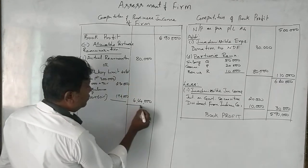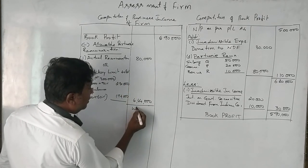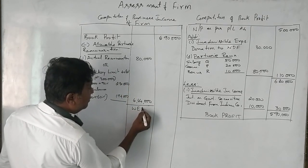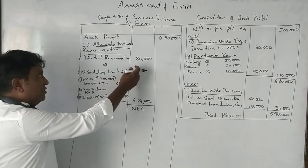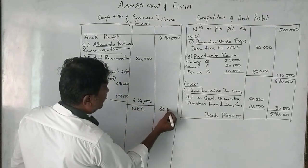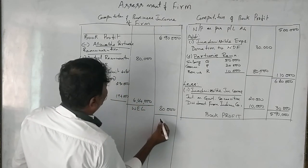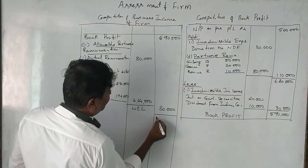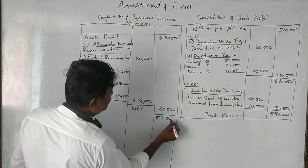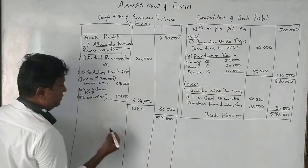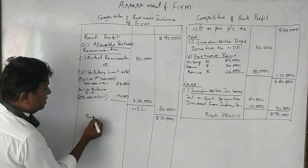Of the two amounts — actual remuneration of 80,000 and statutory limit of 4,44,000 — whichever is lower is taken. So 80,000 is lower. We deduct 80,000 rupees from the book profit of 5,90,000, giving us 5,10,000 rupees as the Business Income of the firm.